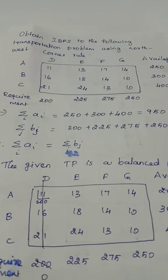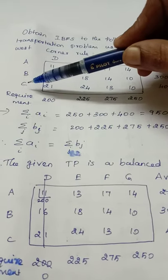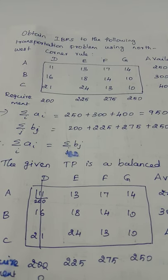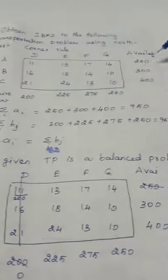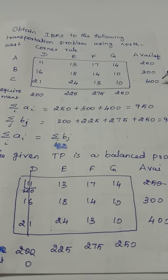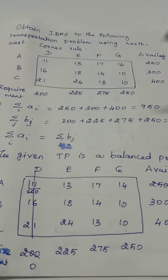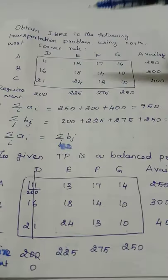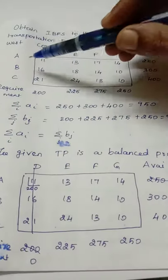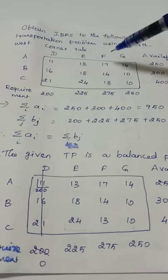So our problem is here. In this problem we have three sources namely A, B and C. These sources produce this much quantity of products. A produces 250 units, B produces 300 and C produces 400 units of the same homogeneous product. Their aim is to transport all those products to four destinations namely D, E, F and G.